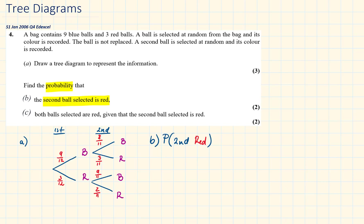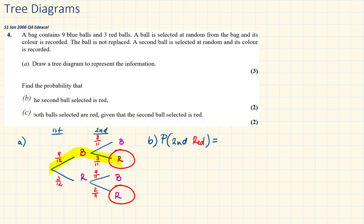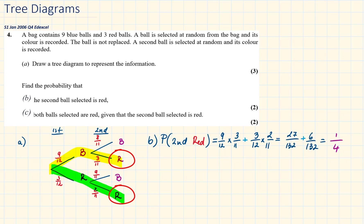Let's find the probability that the second ball selected is red. There are two ways we can pick a red ball on our second pick: picking a blue ball then a red ball, or a red ball then a red ball. In the first scenario, the probability is 9 out of 12 times 3 out of 11. In the second scenario, the probability is 3 out of 12 times 2 out of 11. Adding and simplifying gives us one quarter.